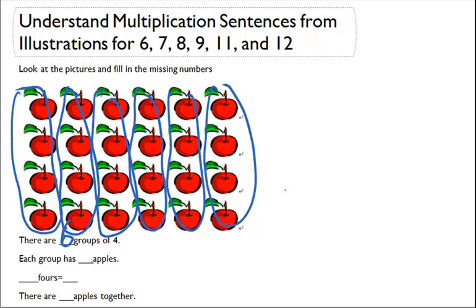And then each group has how many apples? One, two, three, four apples. Great.